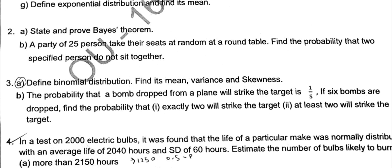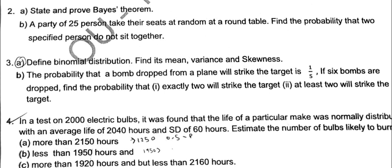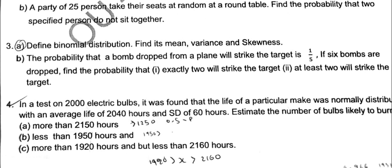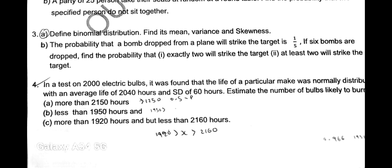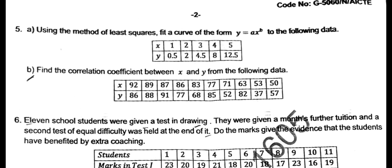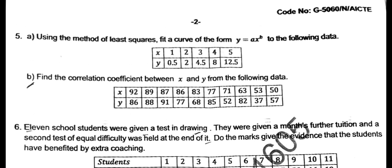Coming to long answers, second A is Bayes theorem - asking for proof. Then a probability question he gave here. Third A is binomial distribution - he is asking mean, variance and skewness. B is a probability question where a bomb is dropped - you can solve it using Poisson distribution or binomial distribution. Then fourth one, directly he gave normal distribution, 14 marks problem.